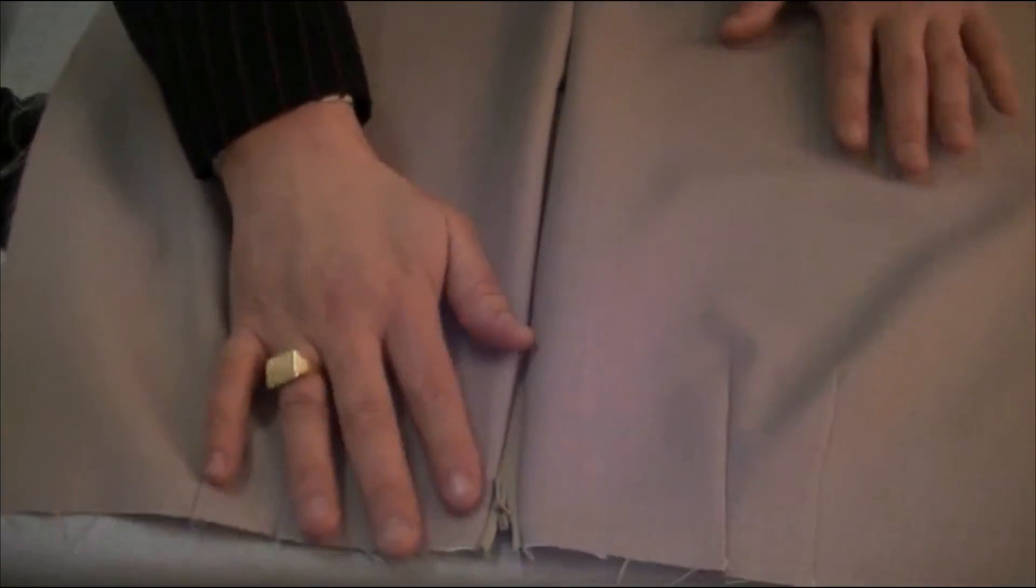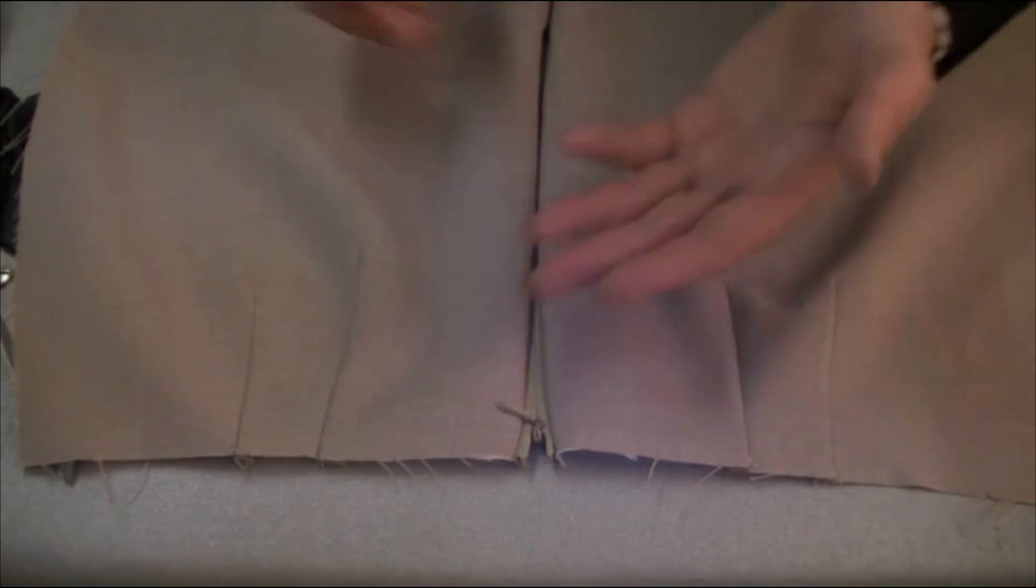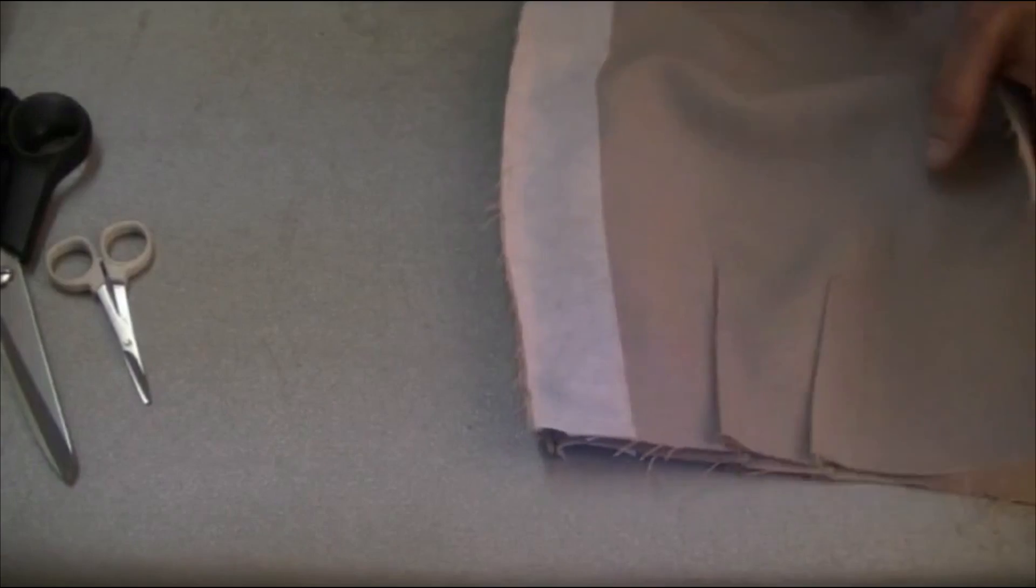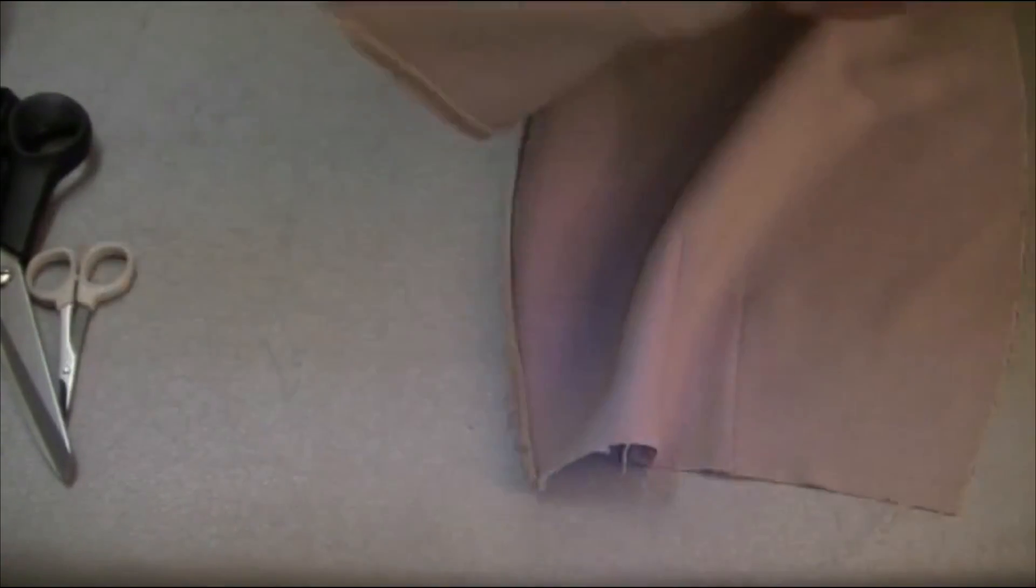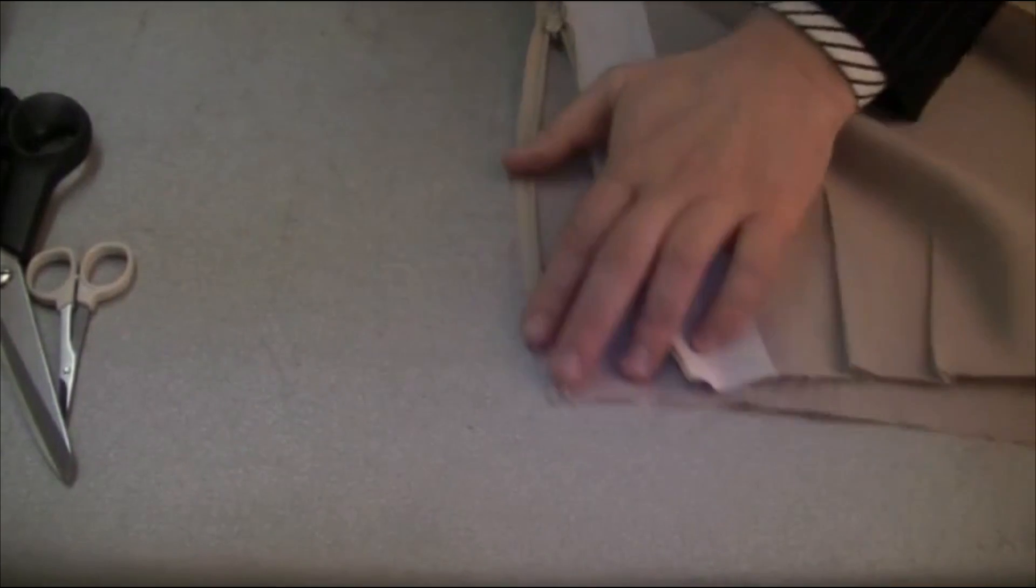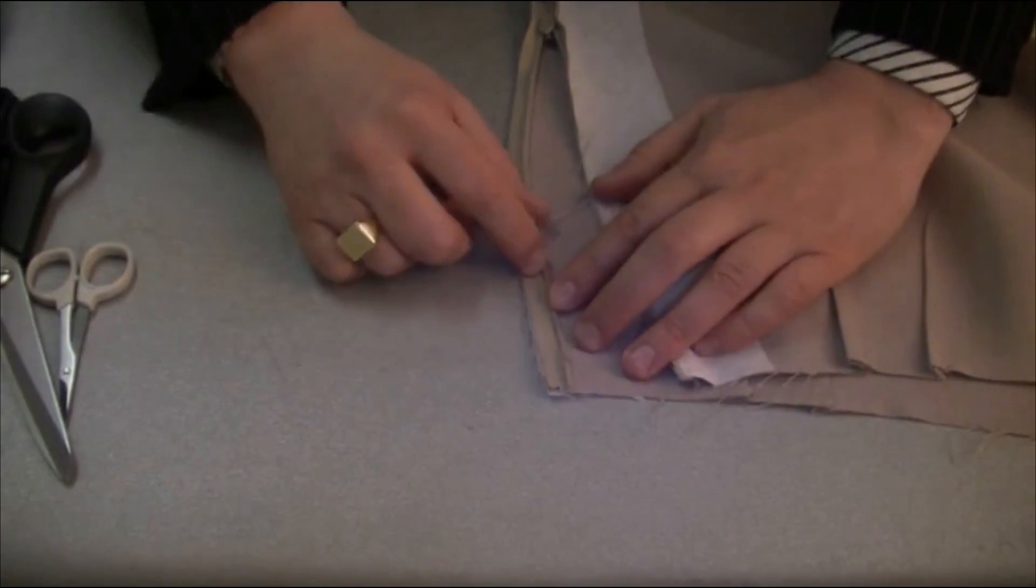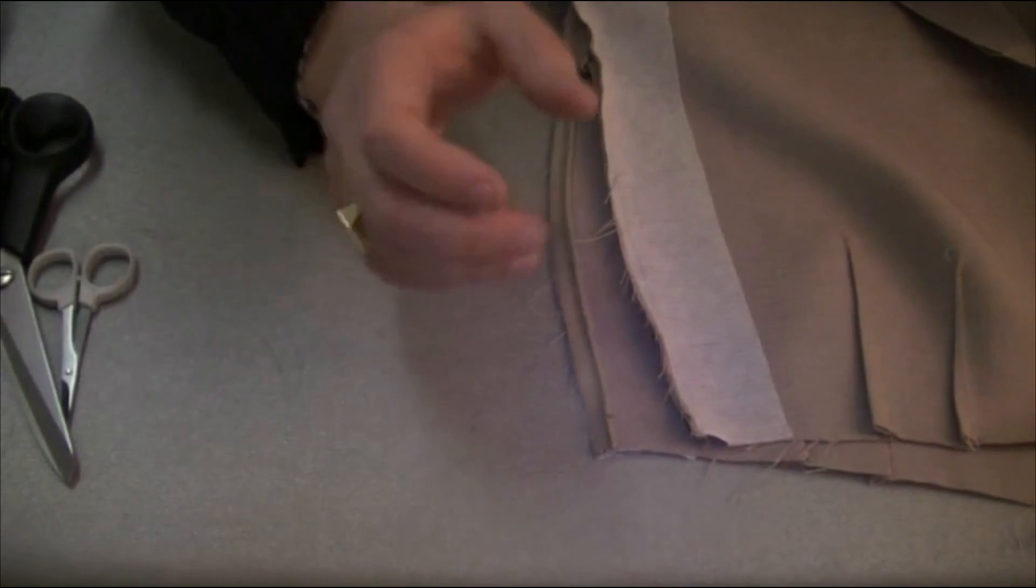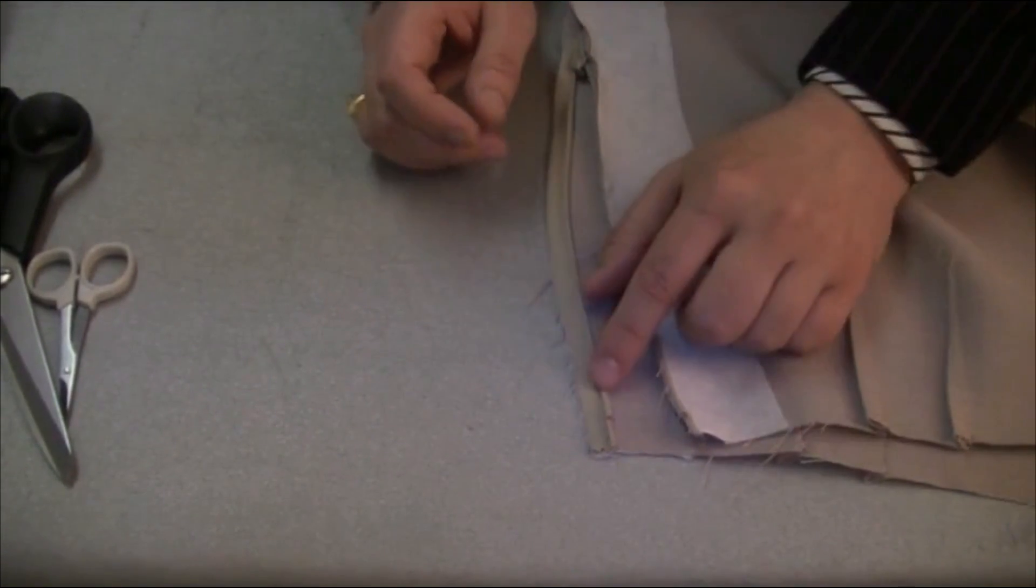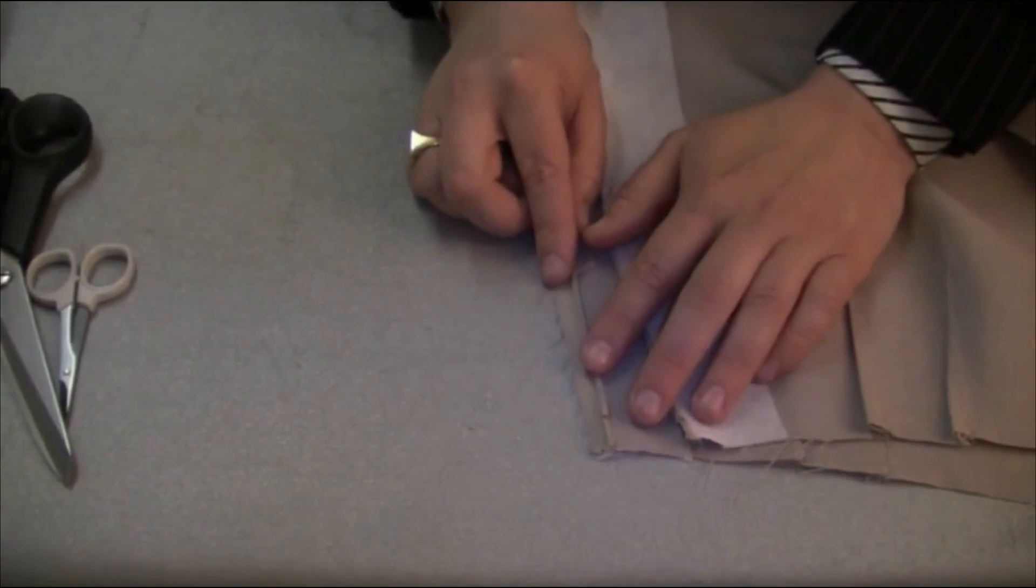So as you can see that's all nice, it's not pulling anywhere, it's all neat. And when yours is like that, if you've achieved the same thing, what we need to do next is we need to be attaching the concealed zip as close to the coils as we can. So what we need to do now is make sure you put your concealed zip foot onto the sewing machine and I will show you now how to do that.